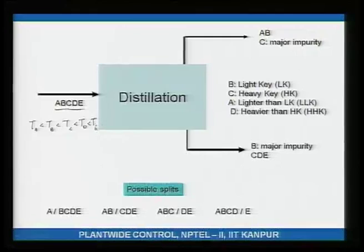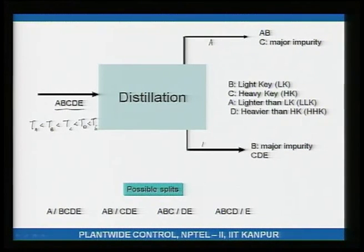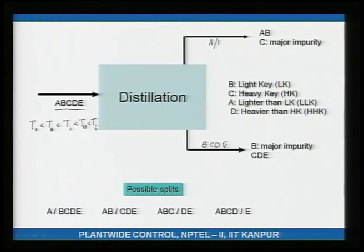Taking A, B, C, D, E and distilling, we can send all of A up the top and the remainder B, C, D, E down the bottoms. Some amount of B impurity will appear at the top as B is the next most volatile, and some A impurity will appear at the bottom. In this case, the split is between A and B.